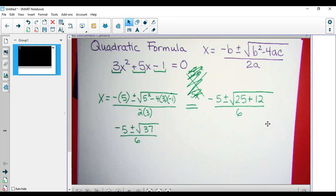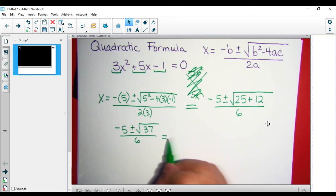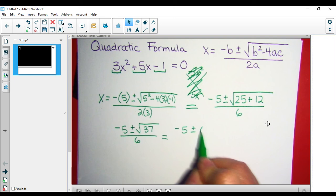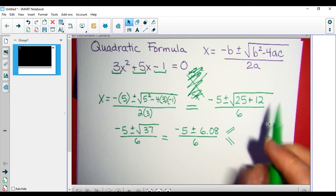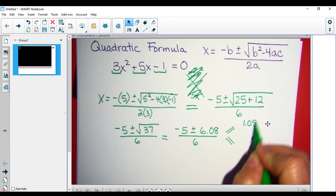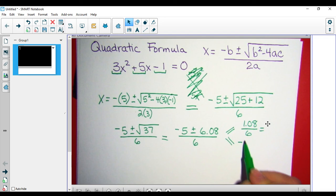Negative 5 plus or minus the square root of 37 divided by 6. The square root of 37, 37 square root is approximately 6.1, it's 6.08 divided by 6. And now we're going to split it into 2. So negative 5 plus 6.08 is 1.08 divided by 6.